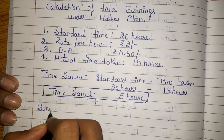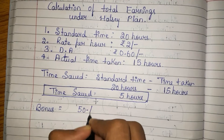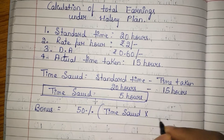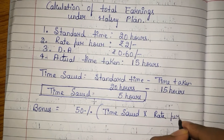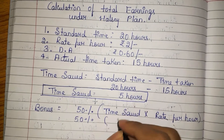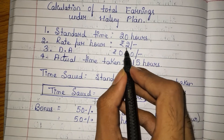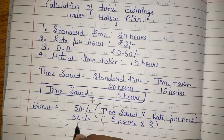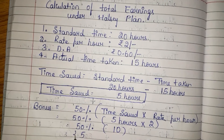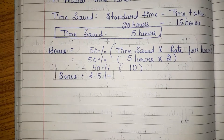Now let us calculate bonus. What is the formula to calculate bonus? It is 50 percent into time saved into rate per hour. So 50 percent into time saved of 5 hours into rate per hour of 2 — that gives 50 percent of 10, which is rupees 5. So bonus is rupees 5.